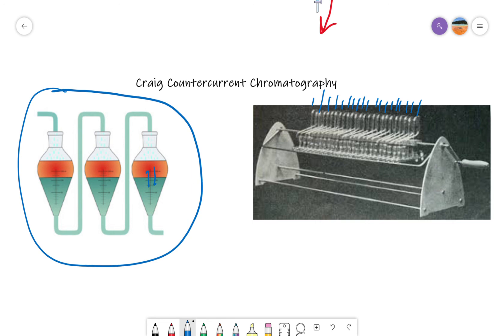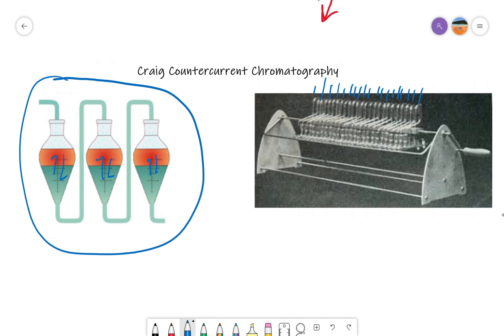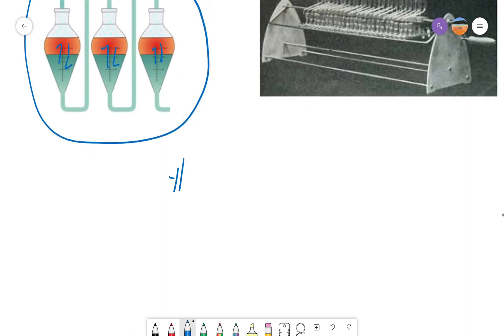This concept of increasing the number of equilibria that you are doing is the fundamental basis of all chromatography. You've got to understand that the number of equilibria, as that increases, your separation of the two compounds increases. Separation in chromatography is based on an equilibrium event between two immiscible phases. And the larger the number of equilibria, the better the separation. All right.